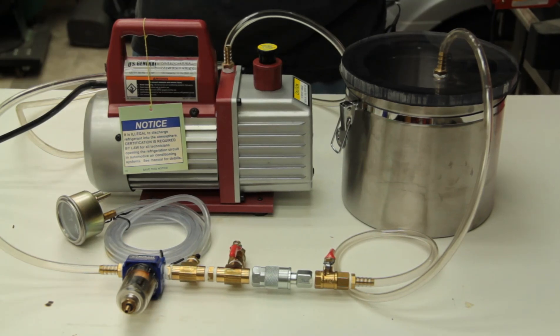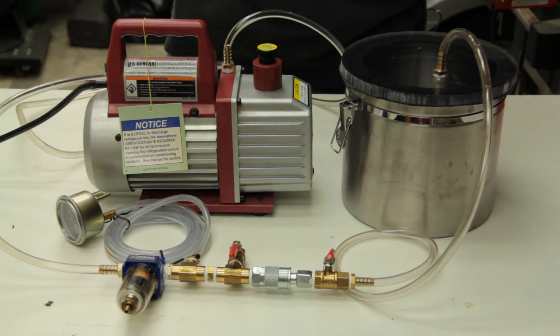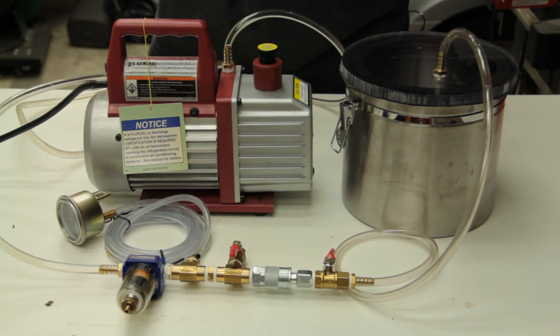Hello, this is Les, and in this video I will be discussing how I put together my vacuum chamber. This particular vacuum chamber I use mostly for degassing epoxies that have been mixed. It can also be used for degassing silicones as well, which is a fairly common use for this type of setup.